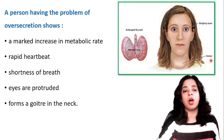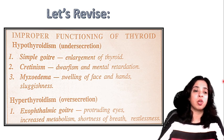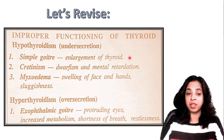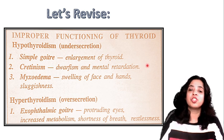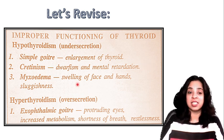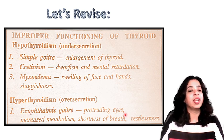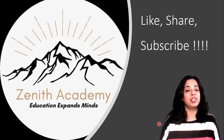Let's revise what happens due to improper functioning of the thyroid. Under-secretion — hypothyroidism — causes three diseases: simple goiter (enlargement of thyroid), cretinism (dwarfism and mental retardation in children), and myxedema (swelling of face and hands, sluggishness in adults). Hyperthyroidism — over-secretion — causes exophthalmic goiter with protruding eyes, increased metabolism, shortness of breath, and restlessness.